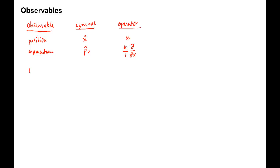The potential energy is represented by the operator V hat. It's a simple multiplication with the potential energy function V.